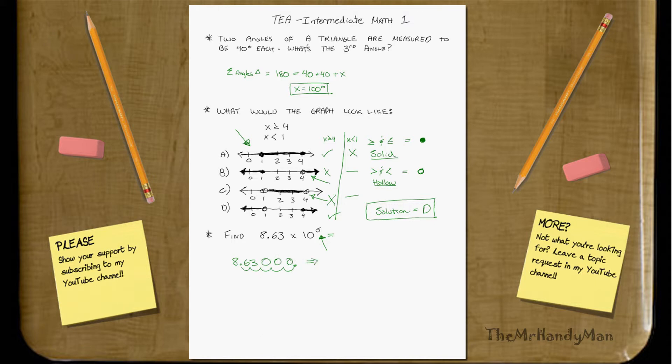And you just fill in the rest with 0s. So therefore, that equals 8, 6, 3, 0, 0, 0. 863,000.